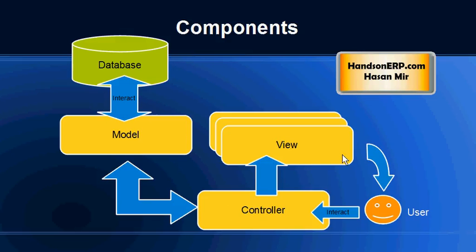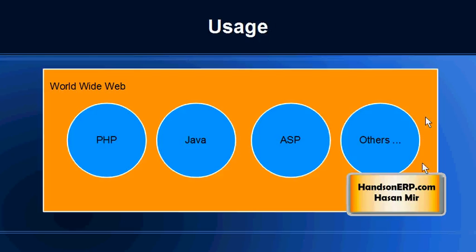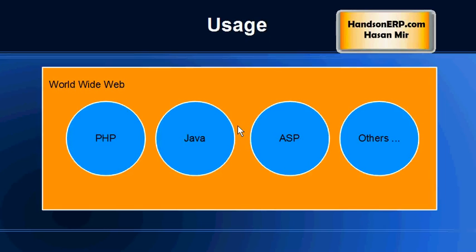We have separated the view from not only the data but also the business logic. The MVC concept is not new — it was presented in the 1970s by programmers of Smalltalk, which is an object-oriented language, and it was implemented in the later version, Smalltalk 80, in the 1980s. In 1988, it was presented as a general concept which could be implemented in other programming languages as well. So it is a common and almost a standard model used in all languages — not only on the World Wide Web, but also in languages that create desktop applications. PHP, Java, ASP, and other languages use the MVC model.